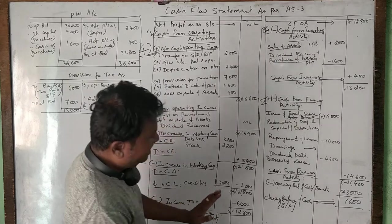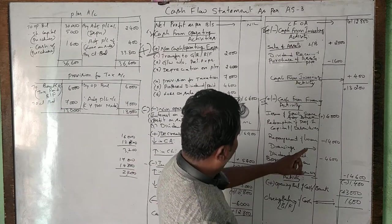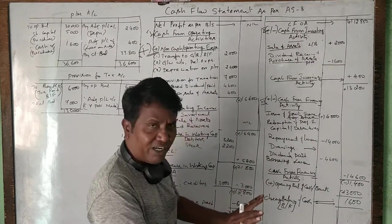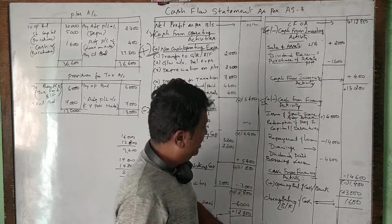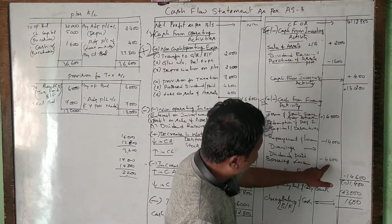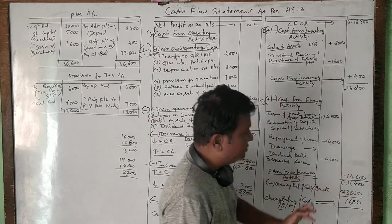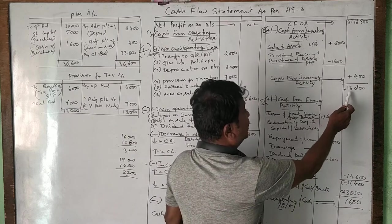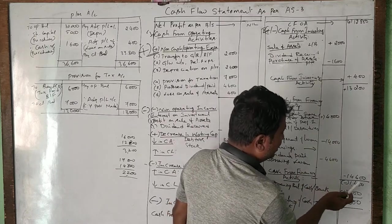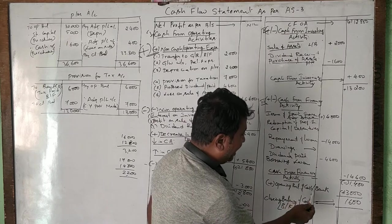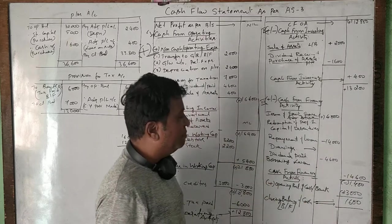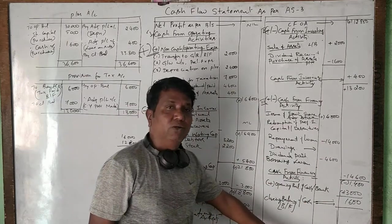Guys, we have done everything correctly. I was a little bit confused with the financing activity totals but it is now rectified — nothing is done wrong, everything is 100% correct. The total net change gives us a closing cash balance of 1,600 rupees, which matches the closing balance of cash in the balance sheet.